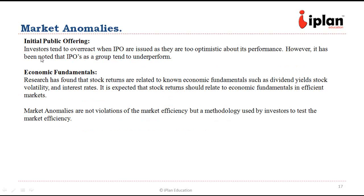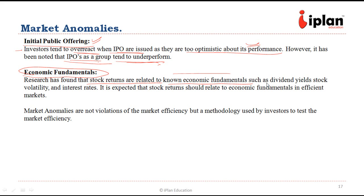Another anomaly is the IPO (initial public offering) — investors are found to overreact when IPOs are issued because they are too optimistic about performance, but overall IPOs as a group tend to underperform. There could also be anomalies because of economic fundamentals — research has found that stock returns are related to known economic fundamentals such as dividend yields, volatility, or interest rates. These are not necessarily violations of market efficiency but rather methodologies used to test it. Anomalies arise and once noticed, are removed by trading activity.